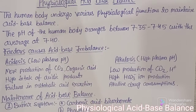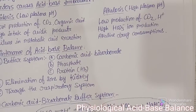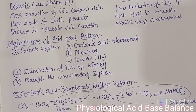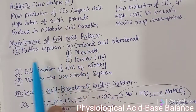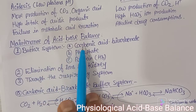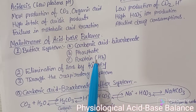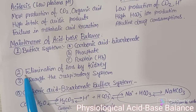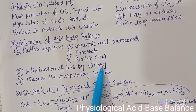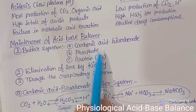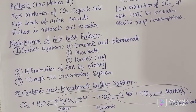Now, what does the body do for maintenance of acid-base balance? There are different types of functions: first, the buffer system — which includes three types: carbonic acid and bicarbonate buffer system, phosphate buffer system, and protein buffer system. Second, elimination of ions by the kidney. Third, the respiratory system.